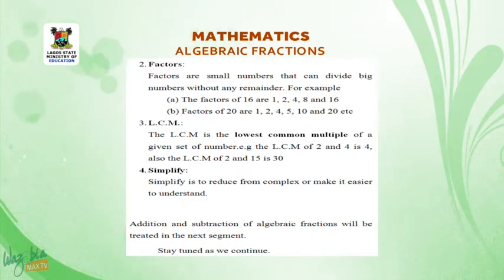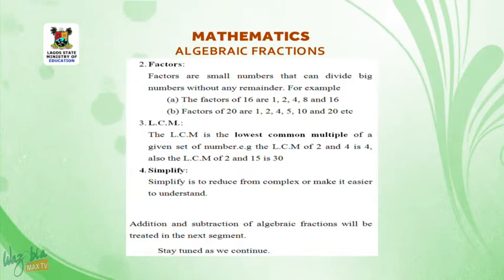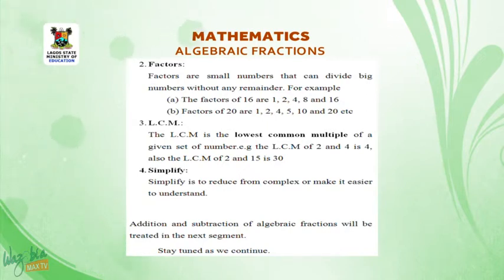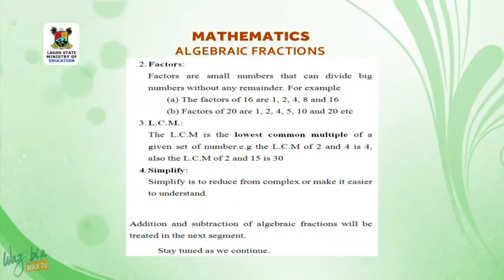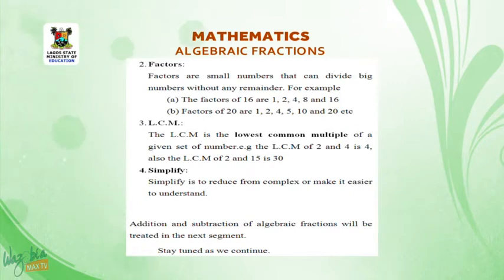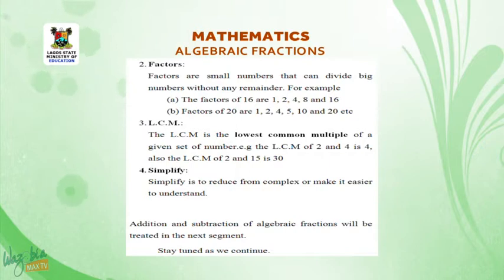3. LCM. The LCM is the lowest common multiple of a given set of numbers. For example, the LCM of 2 and 4 is 4. Also, the LCM of 2 and 15 is 30.